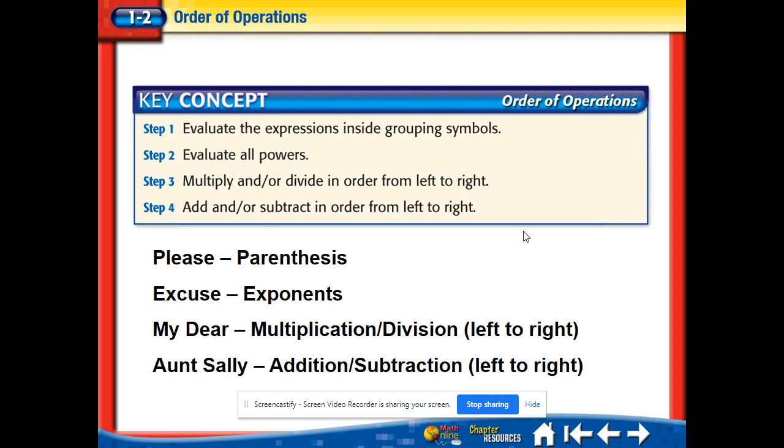So here's our key concept. We have several different steps. On the bottom we put please excuse my dear aunt Sally. Many of you know that. P stands for parentheses. If you notice on the top it says expressions using grouping symbols. There are more than just parentheses. There are also brackets sometimes that are used. So that's why they use grouping symbols there.